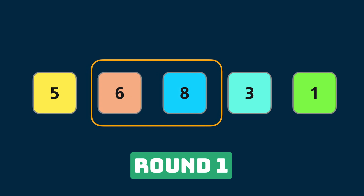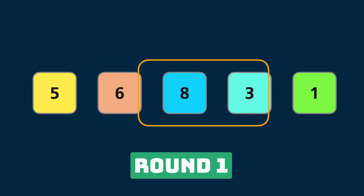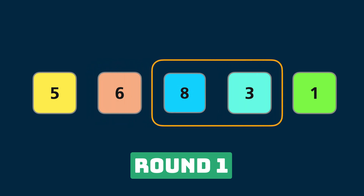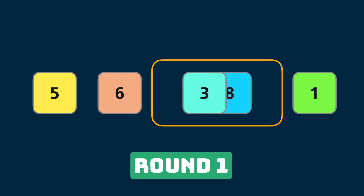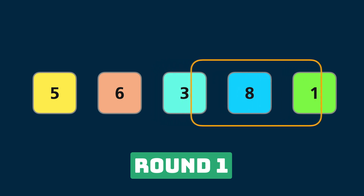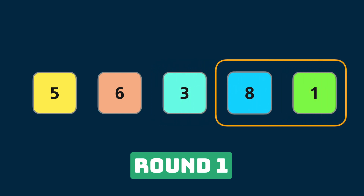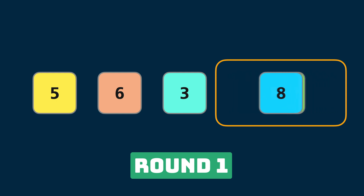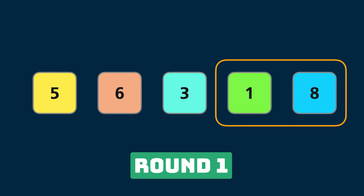Then the third pair — again eight is greater than three, we swap those two elements again. And finally the last pair on this round: eight is greater than one, that's why we move eight to the last position in this array of elements.